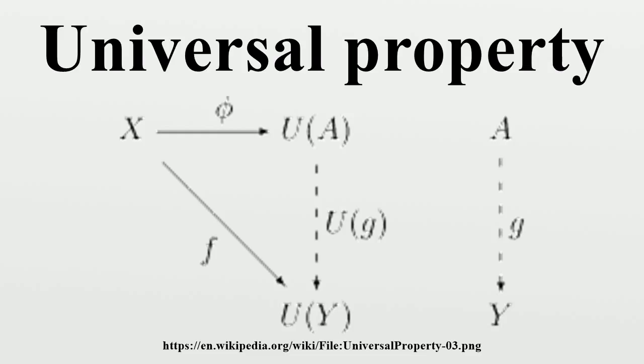An initial morphism from X to U is an initial object in the category of morphisms from X to U. In other words, it consists of a pair (A, φ) where A is an object of D and φ: X→U(A) is a morphism in C, such that the following initial property is satisfied. Whenever Y is an object of D and f: X→U(Y) is a morphism in C, then there exists a unique morphism g: A→Y such that the following diagram commutes.